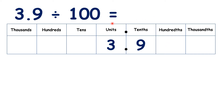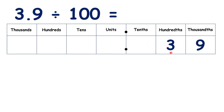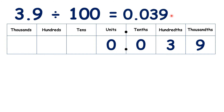Now, what is 3.9 divided by 100? We're moving the digits two places, writing 0s in our empty place value columns as needed, so we get 0.039.